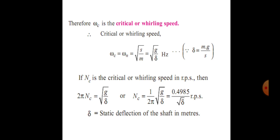The critical speed formula: omega_c equals omega_n equals square root of S upon M equals square root of g over delta. Here delta equals m into g upon S, where delta is the static deflection of the shaft in meters. If nc is the critical speed or whirling speed in rps, then nc equals 1 upon 2 pi times square root of g upon delta, which gives nc equals 0.4985 divided by square root of delta in rps.